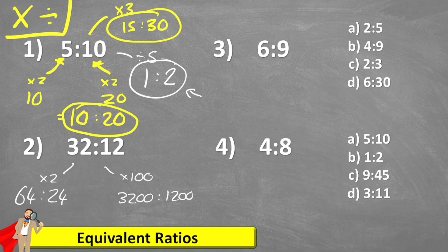But again, I could also divide. And in this case, I'm going to divide by two, because I can see two is a common factor. 32 divided by two is 16. 12 divided by two is six.